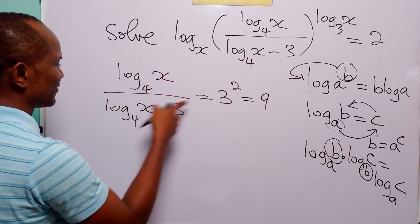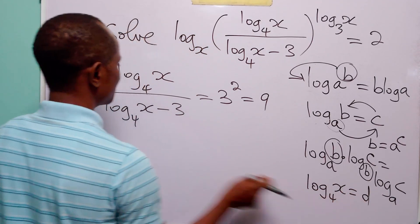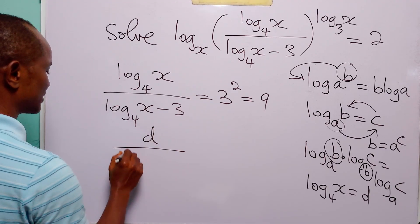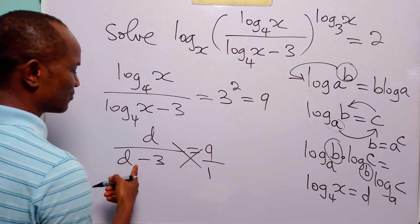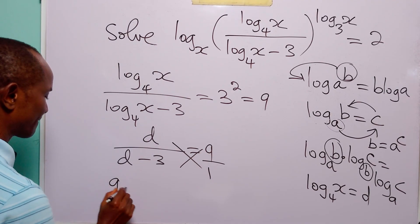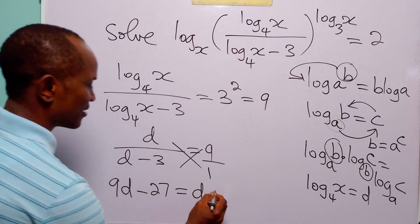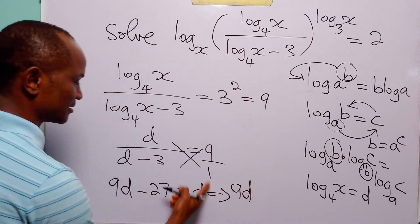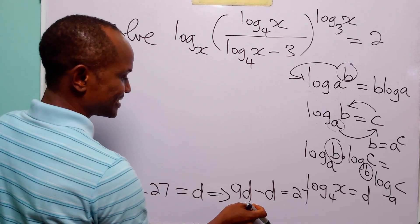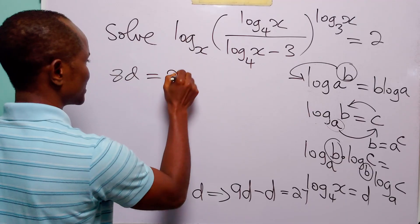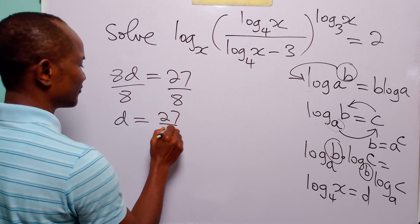We now have log to base 4 of x divided by log to base 4 of x minus 3 equals 9. Let log to base 4 of x be equal to d. With this substitution, the equation becomes d divided by d minus 3 is equal to 9. Cross multiplying gives 9d minus 27 equals d, so 8d equals 27, and dividing both sides by 8 gives d equals 27 over 8.